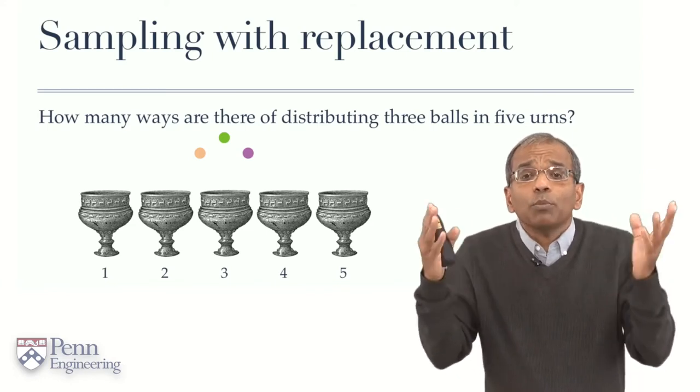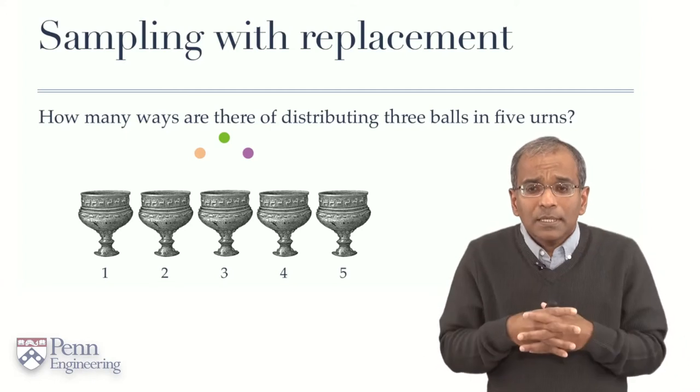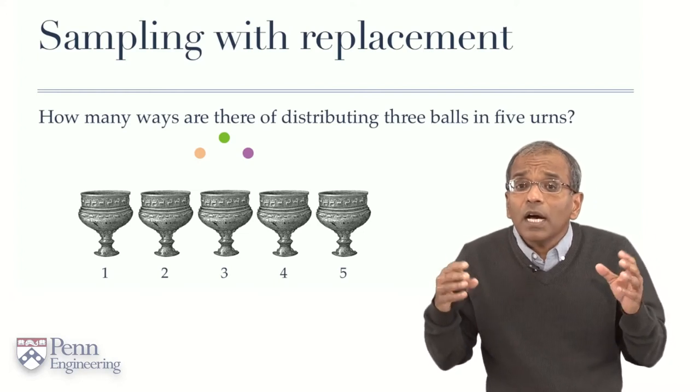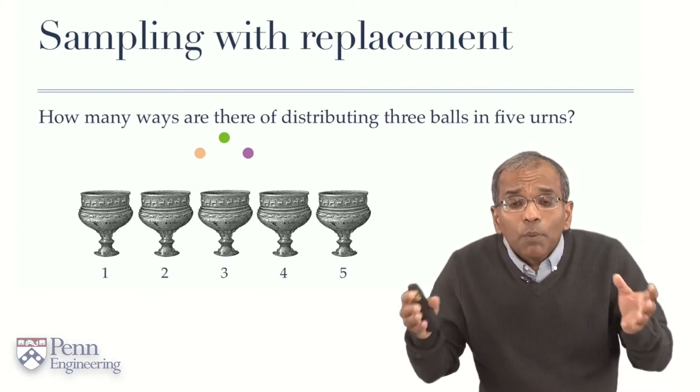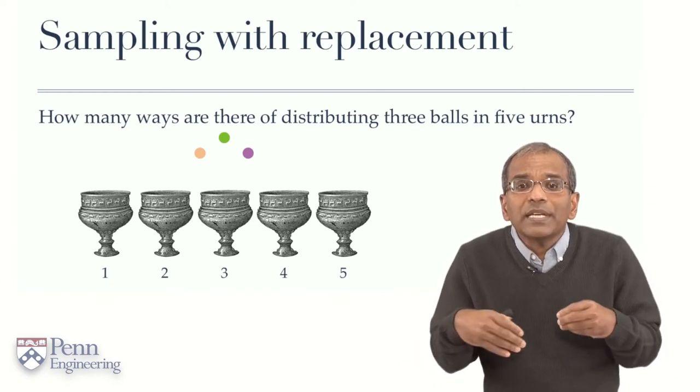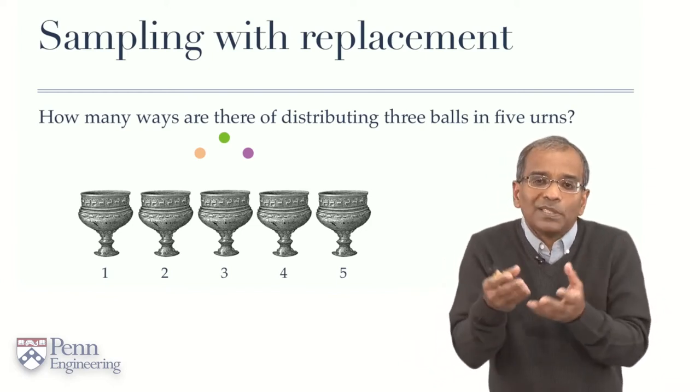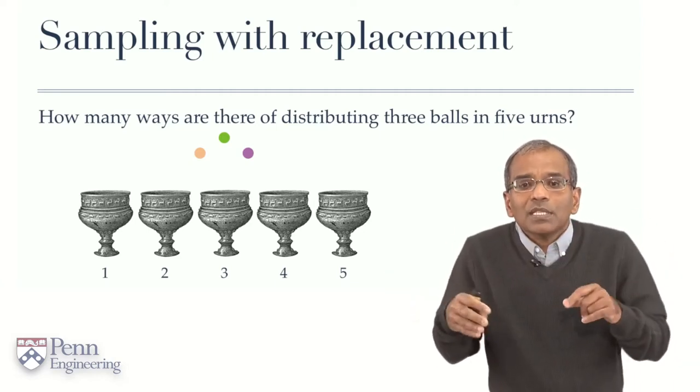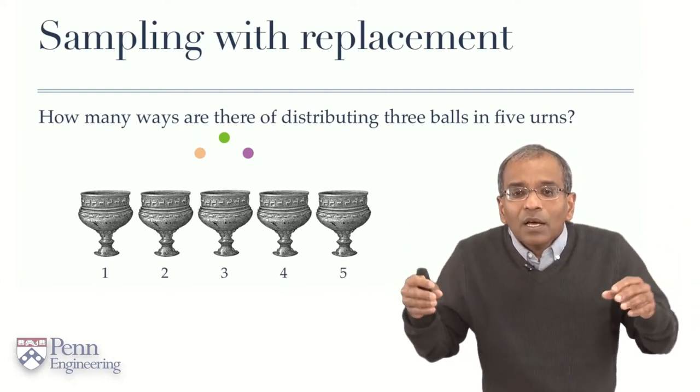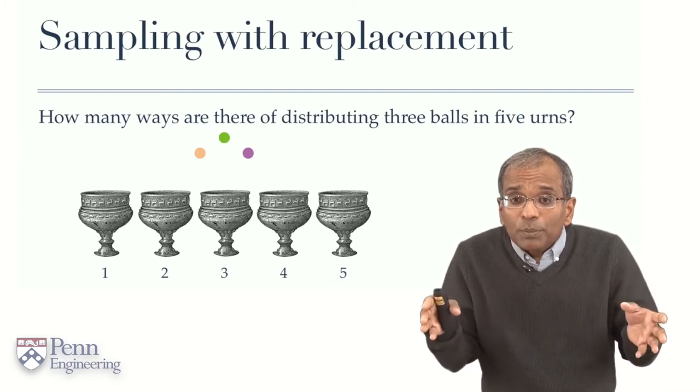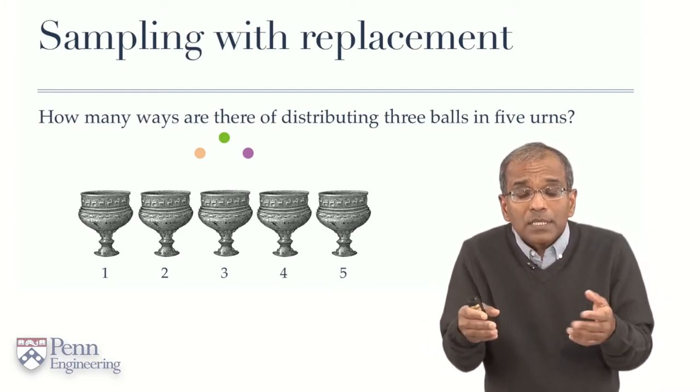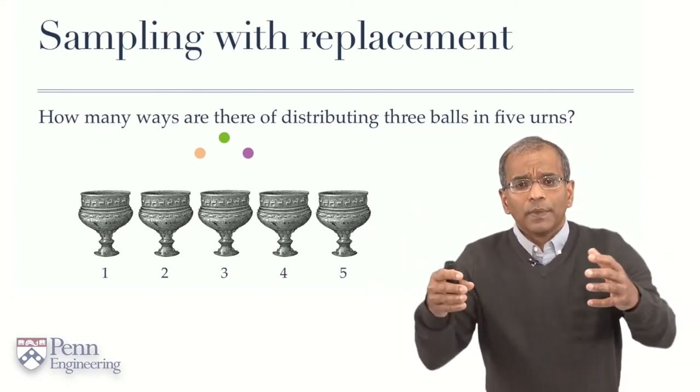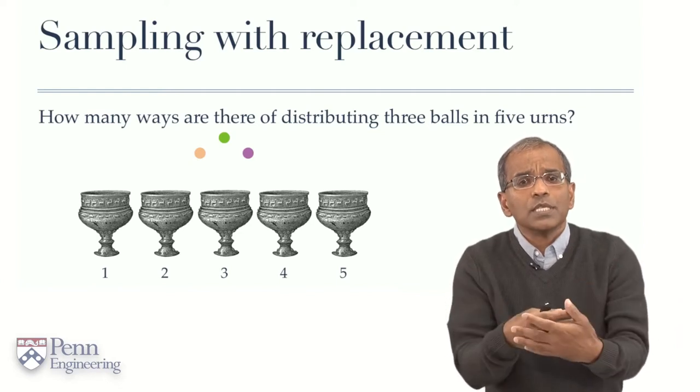Now consider a setting like this. Suppose we have three balls. I have indicated them for you in colors: a peach colored ball, a green ball, and a purple ball, and five urns. The urns and the balls are considered implicitly to be distinguishable. For example, the balls I have clearly given you have three different colors, or they could have the numbers one, two, and three on them, something like a snooker or a billiard ball setting. The urns likewise are considered to be distinguishable and I have indicated this by giving them numbers one, two, three, four, five. Now here is a question: how many ways can I put these three balls into these five urns?